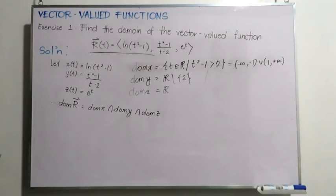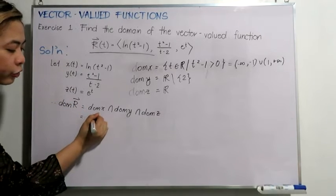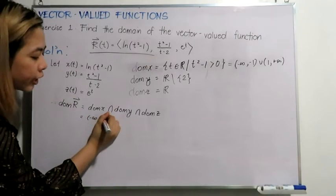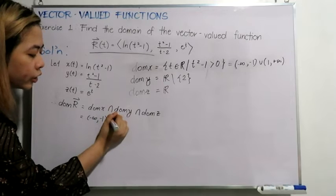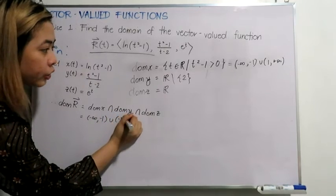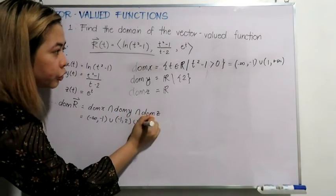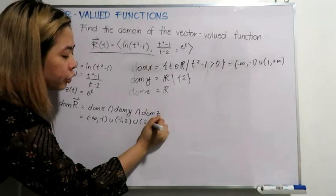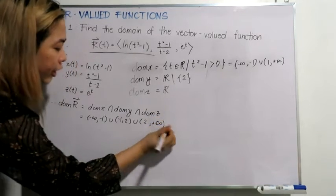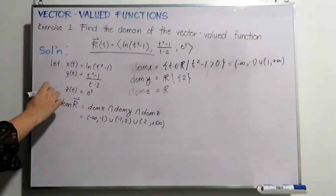Thus, we are left with the interval negative infinity to negative 1, union negative 1 to 2, union 2 to positive infinity. And that is the answer.